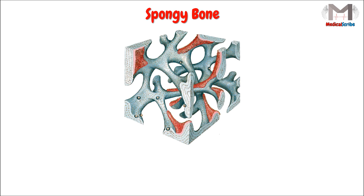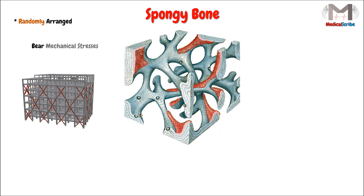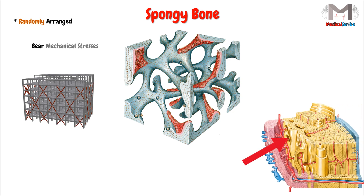If someone looks at the trabeculae, it seems randomly arranged. But in fact, the trabeculae are arranged in an optimal and efficient manner to bear the mechanical stresses and strains, exactly like the braces that support a building. And between this complex network of overlapping and interconnecting trabeculae, we will find spaces or cavities that are often filled with bone marrow or blood vessels.